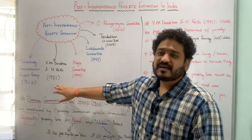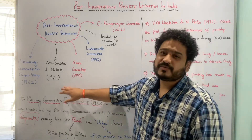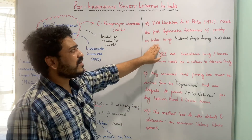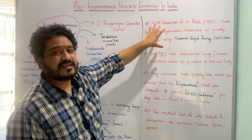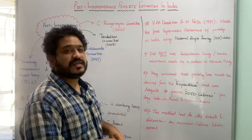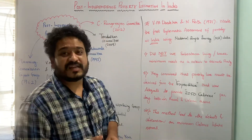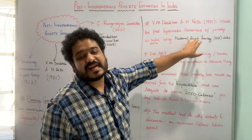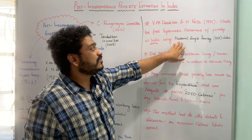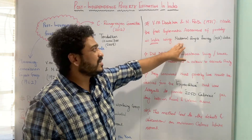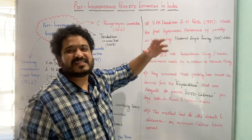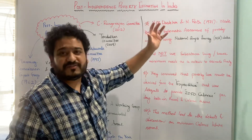Let us now move to the next group, which is V. M. Dandekar and N. Rath, who talked about poverty estimation in the Indian context in 1971. They made the first systematic assessment of poverty in India using the National Sample Survey Organization data, or NSS data. This is the first ever group to talk about poverty estimation in terms of NSS data. The National Sample Survey Organization works under the Ministry of Statistics and Program Implementation and collects data with respect to consumption expenditure on different commodities.